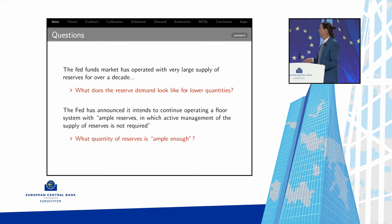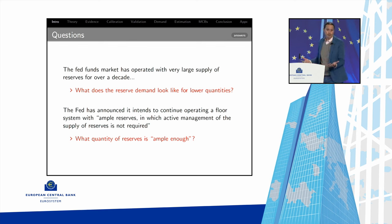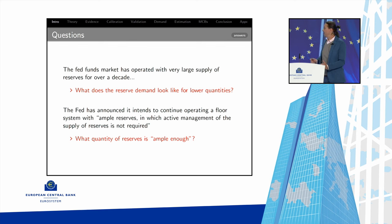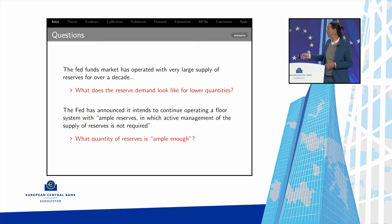Two specific questions: First, what does reserve demand look like for lower quantities? Since Dodd-Frank, we haven't visited reserve quantities below a trillion, so if it has shifted structurally, we'd like to know what it looks like. Second, we need a number. Neil Wallace — my advisor's advisor — used to say there's no interesting question for which the answer is a number. I think this is probably the only counter-example I know to that.